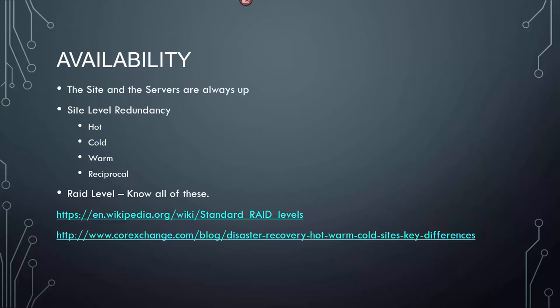Availability means the site and servers are always up. There's site-level redundancy: hot, cold, and warm sites. I actually got a test question on the reciprocal — that's basically where you allow someone to use your data center for the purposes of their disaster recovery. It will not work when they're in the same area, and it's the slowest because of legal issues associated with it.